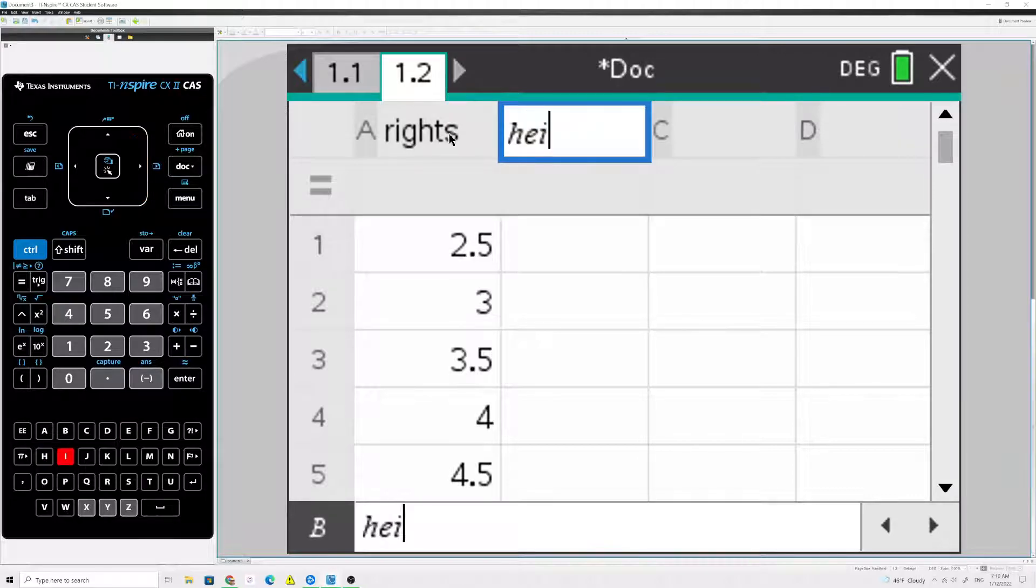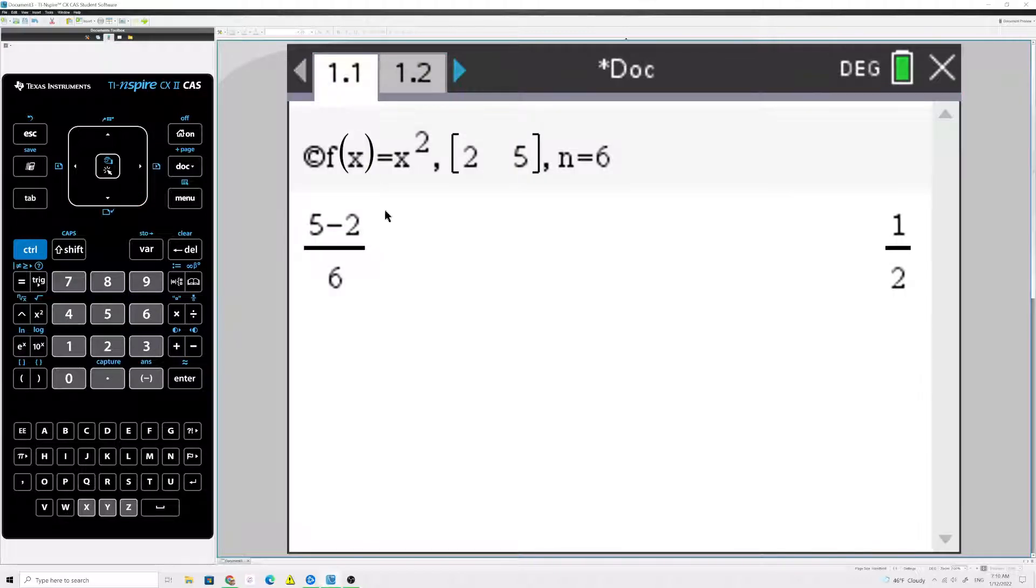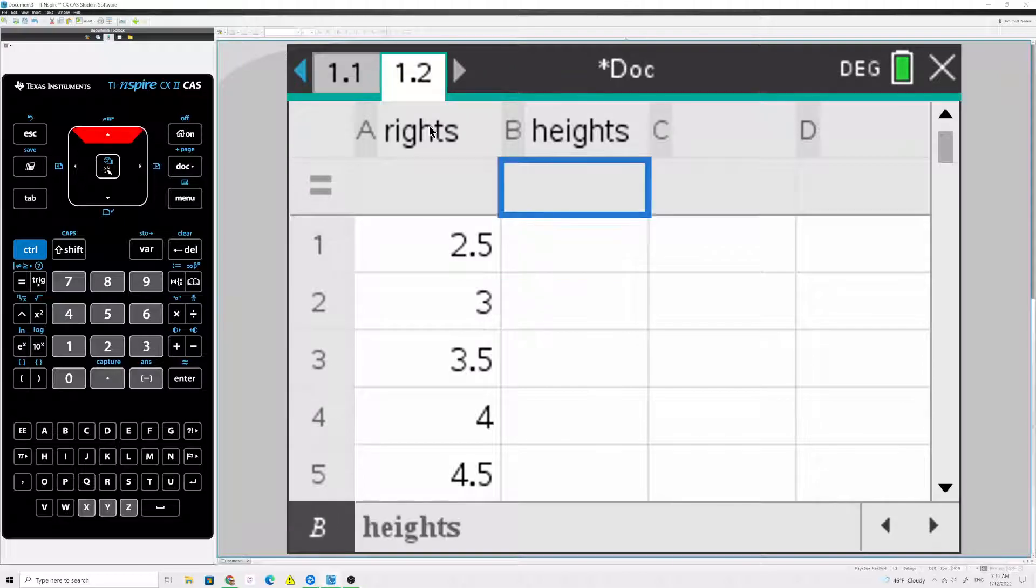Now, for the height of the rectangles, we need to evaluate our function at the right endpoints. So I never defined the function on this page, so I'll go back and define it. The line at the very top is just some text, so we'd know what the problem was. So we have f of x equals x squared. Now, doing this one at a time would take a while.